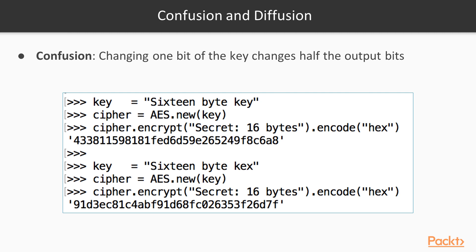This has many desirable cryptographic properties, and one of them is confusion. If you change a bit of the key, it changes the entire ciphertext. So if I change the key from KEY to KEX, you see all of the ciphertext changes. It starts with 433 and ends in 6A8; now it starts with 91D and ends in D7F. Two very similar keys produce completely different results, so you cannot find any pattern in the results that you could use to deduce information about the key.